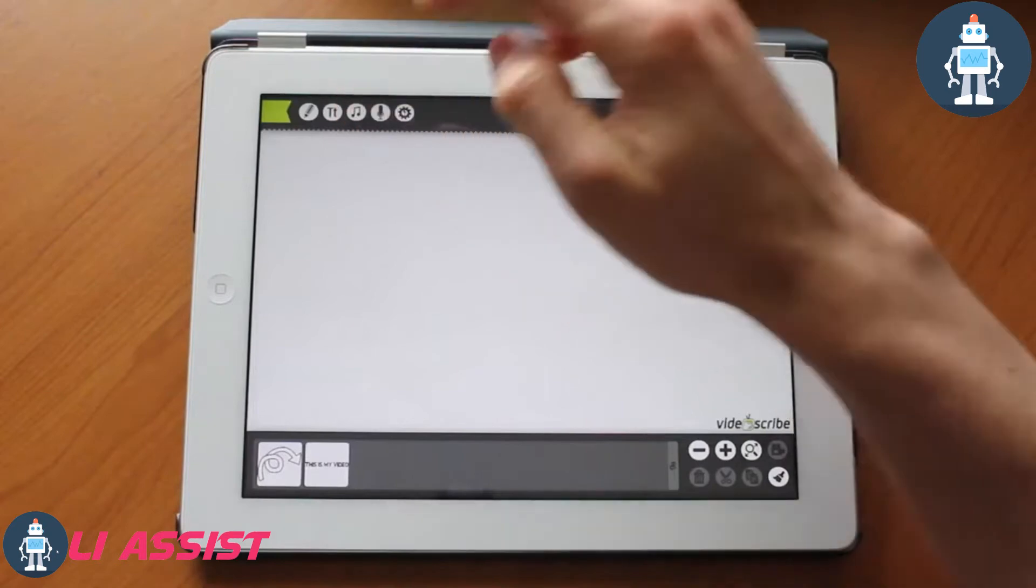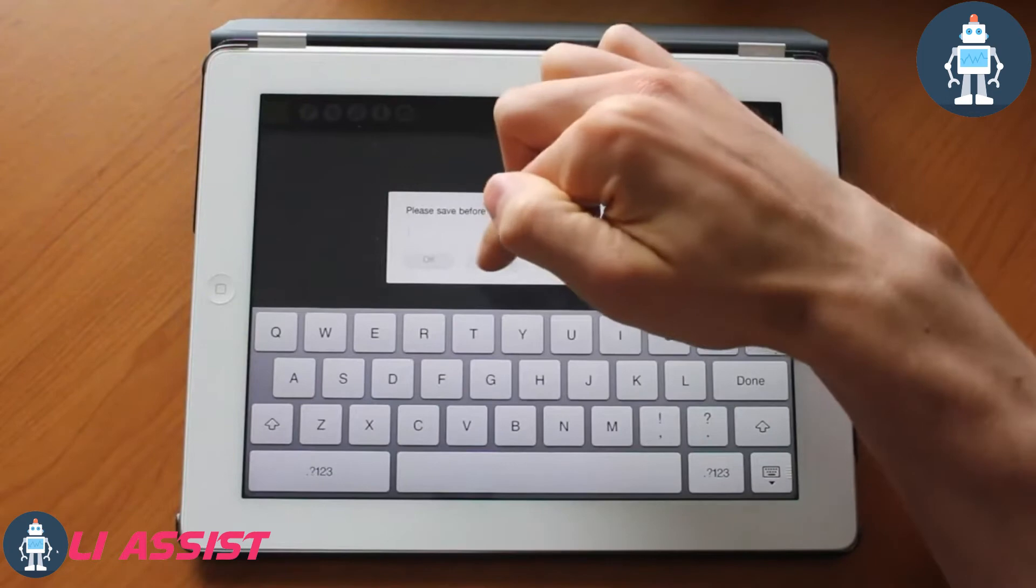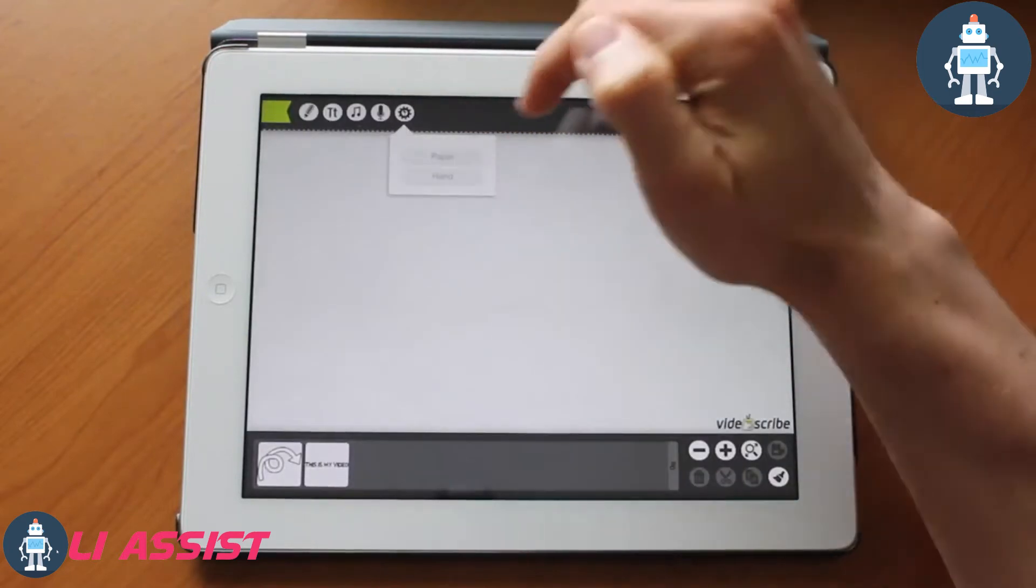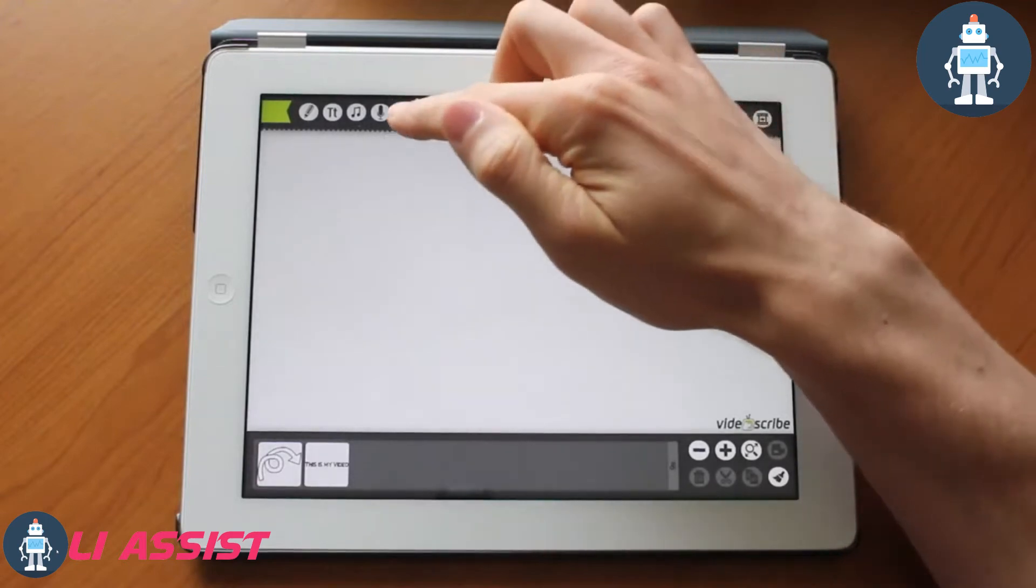You can go ahead and add more screens down here. You can actually add music from your library, you can add tracks, you could record something, and you could choose different hand styles and paper as well.